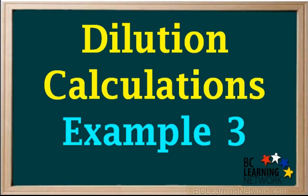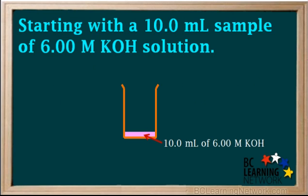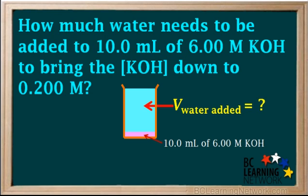In this video, we'll do another example of a dilution calculation using the dilution formula. Starting with a 10 milliliter sample of 6 molar KOH solution, how much water needs to be added to 10 mils of 6 molar KOH to bring the concentration of KOH down to 0.2 molar?